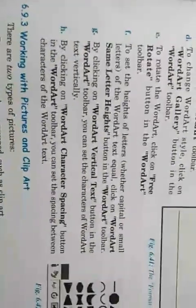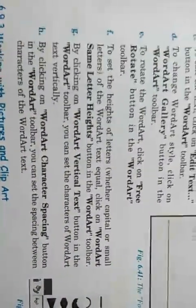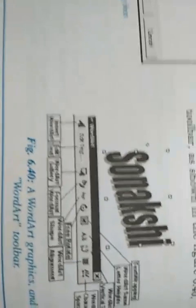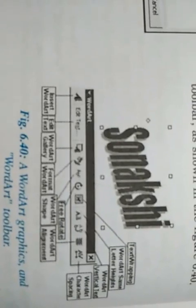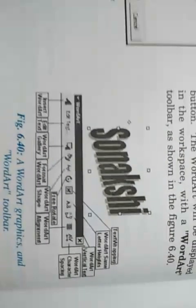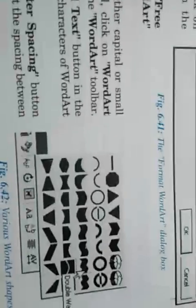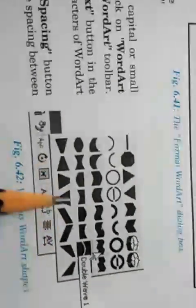If you want to change the style of an already-created WordArt, there is an option in the WordArt toolbar called WordArt Shapes. Click on it and multiple designs will appear. Select any design and your text will change according to the selected style.